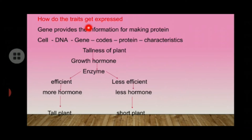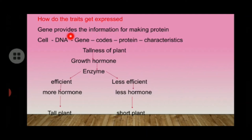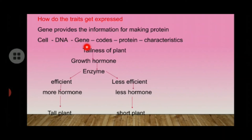How do traits get expressed? Traits like shortness or tallness of a plant, or round or wrinkled seeds — how are they expressed? We know genes provide information for making proteins. It means a gene codes for the production of a particular protein. In a cell, we have a nucleus containing chromosomes made up of DNA. A segment of DNA is called a gene, which codes for a protein.